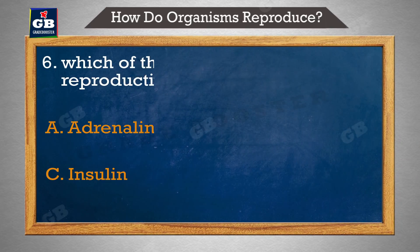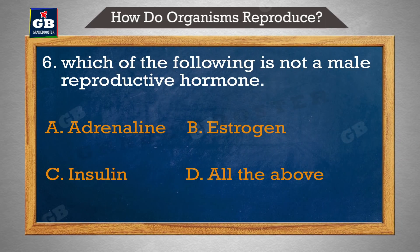Which of the following is not a male reproductive hormone — nimn mein se koi male reproductive hormone nahin hai. A. Adrenaline, B. Estrogen, C. Insulin, D. All the above.